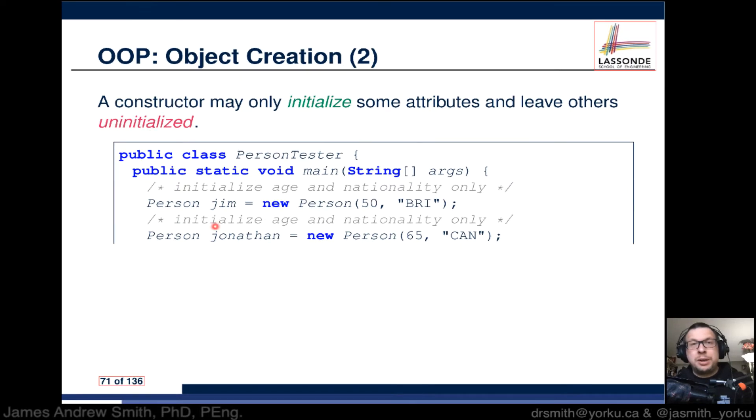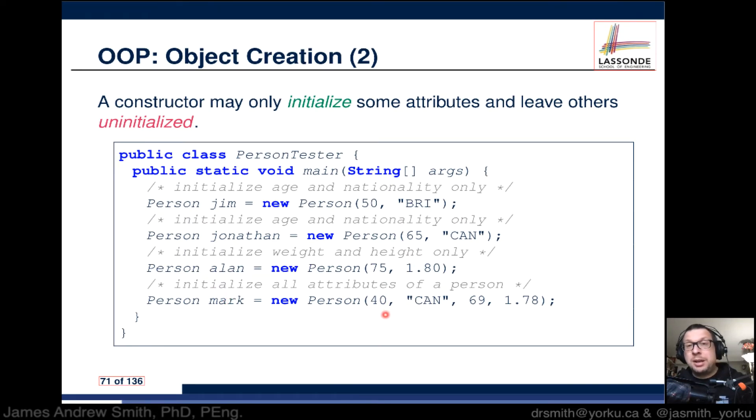We're going to say that Jim's going to have an age of 50 and a nationality of British. Now we can create an object called Jonathan of type Person with the constructor, and we're going to assign a nationality of Canadian and 65 as an age to Jonathan. We want to create another object, this time Alan. Instead of specifying Alan's nationality like we did for Jim and Jonathan, we're going to say that Alan's age—or actually Alan's weight—is 75 and Alan's height is 1.80 meters, which we didn't do for Jonathan and Jim. We also have Mark here, and Mark can be initialized to all four of those really important parameters: age, nationality, weight, and height.